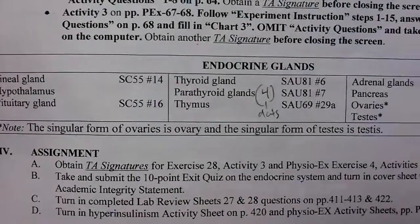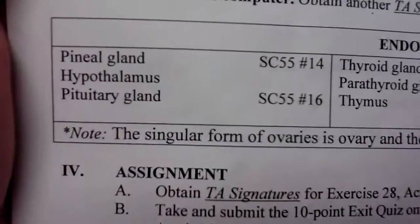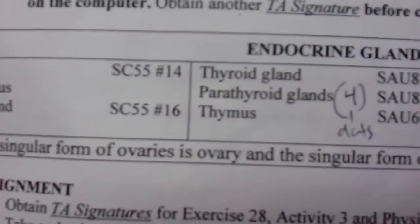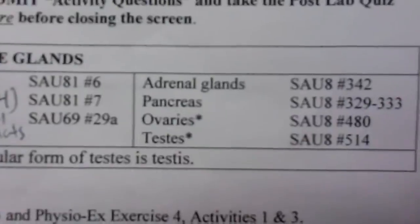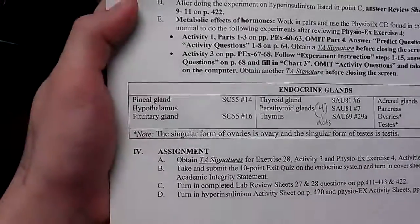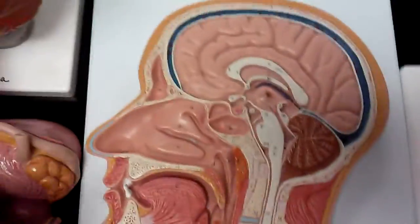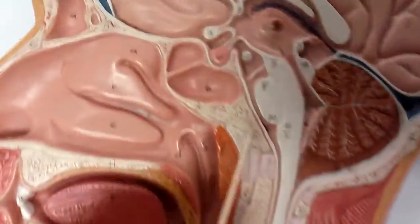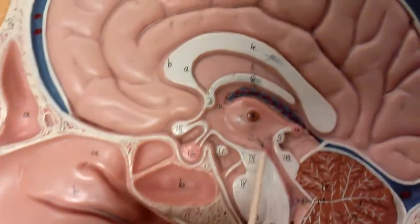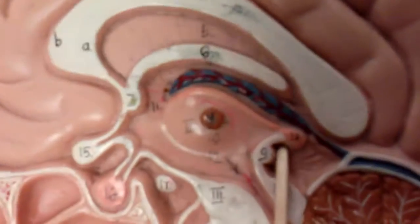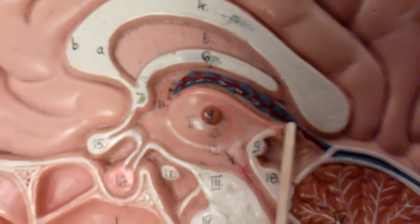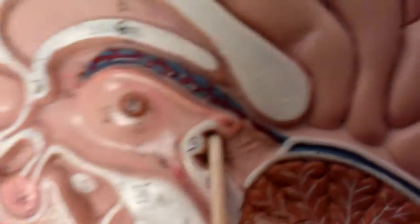Earlier we go over the endocrine glands — here is the list of them. First one: the pineal gland. That is going to be on the brain. The pineal gland is over here, that one to the right.